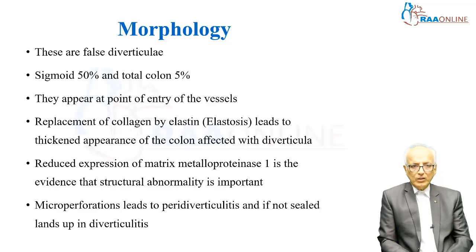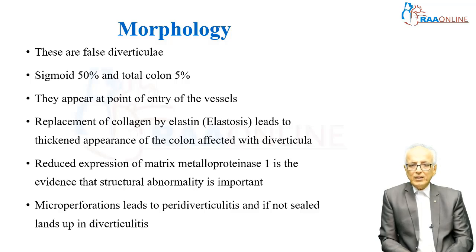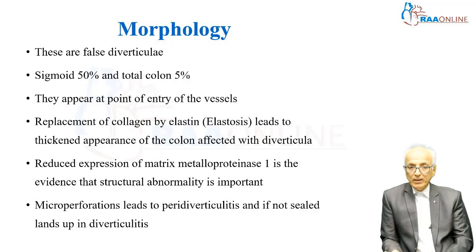It is a false diverticulum. The sigmoid colon is affected in nearly 50% of cases, and the total colon can be affected in 5% of patients. They appear at the point of entry of the vessels. Because of the replacement of collagen by elastin, the affected colon with the diverticula appears thicker than unaffected areas. Reduced expression of matrix metalloproteinase 1 is evidence that structural abnormality is important in diverticulum formation. Micro-perforations lead to peridiverticulitis, and if not sealed, this leads to classical acute diverticulitis.